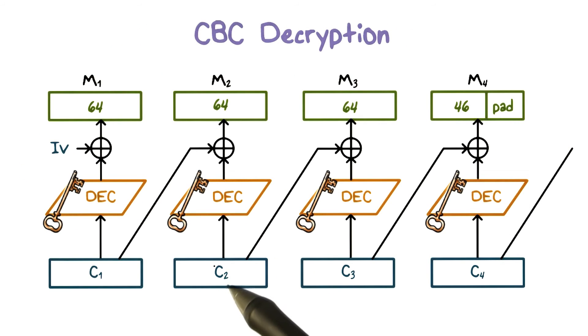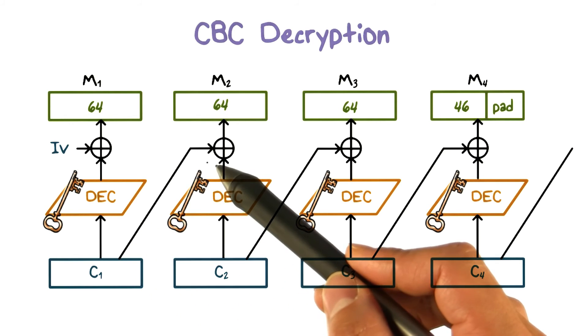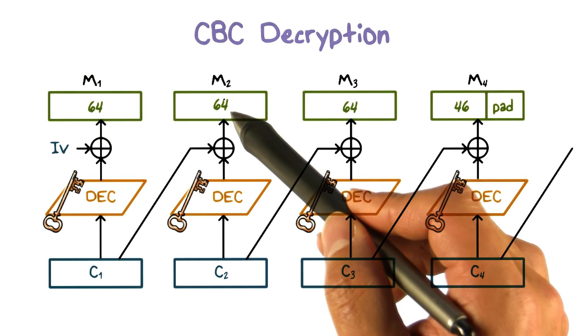Here's how decryption in CBC works. A ciphertext block is decrypted, and then the result is XORed with the previous ciphertext block to produce the current plaintext block.